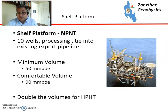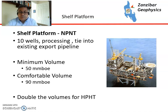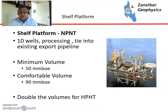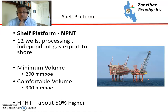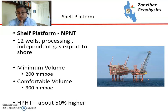Moving to a shelf platform — normal pressure, normal temperature. This is a picture of the Judy platform, another project I worked on. Say the shelf platform has 10 wells with processing tied into an existing pipeline: you'd want a minimum of about 50 million barrels of oil equivalent; a comfortable volume would be 90 to 100 million. For high pressure, high temperature, you want to double those numbers. If you've got a shelf platform with a gas export pipeline — like Everest in the North Sea, the central hub for the CATS pipeline — you'd want about 200 million barrels of oil equivalent, with 300 million to be really comfortable. That's roughly 1.2 to 1.5 TCF of gas, higher still for high pressure, high temperature.